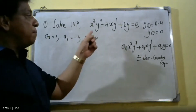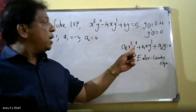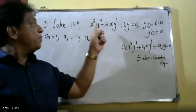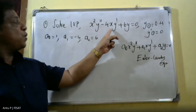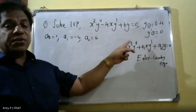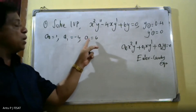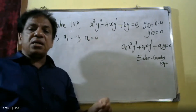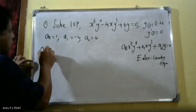First, we compare the standard form of the Euler-Cauchy equation with our problem. After that, we write the auxiliary equation.